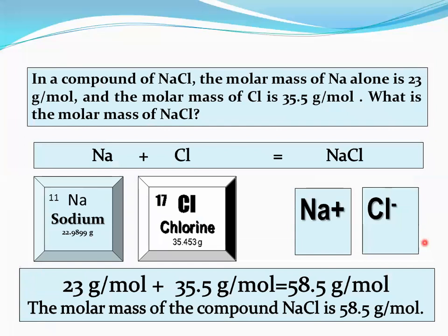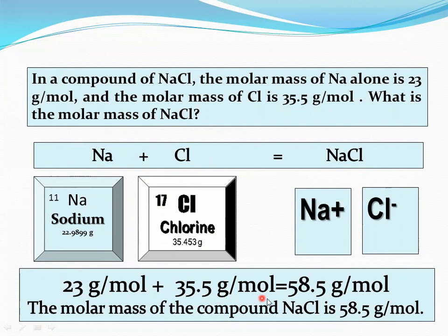In a compound of NaCl, the molar mass of Na alone is 23 grams per mole and the molar mass of chlorine is 35.5 grams per mole. Adding them gives 58.5 grams per mole. So we can say the molar mass of the compound NaCl is 58.5 grams per mole.